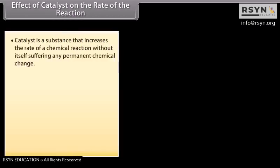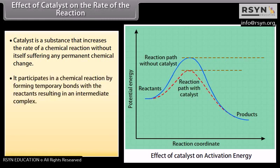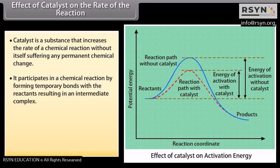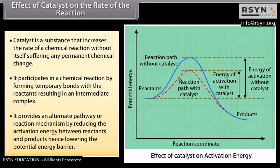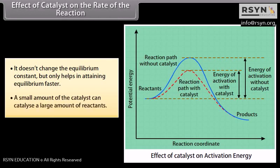Effect of catalyst on the rate of the reaction: a catalyst is a substance that increases the rate of a chemical reaction without itself suffering any permanent chemical change. It participates by forming temporary bonds with the reactants resulting in an intermediate complex. It provides an alternate pathway by reducing the activation energy, hence lowering the potential energy barrier. It doesn't change the equilibrium constant but only helps in attaining equilibrium faster. A small amount of catalyst can catalyze a large amount of reactants.